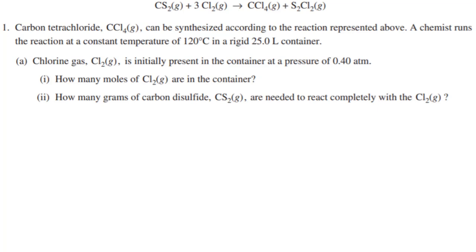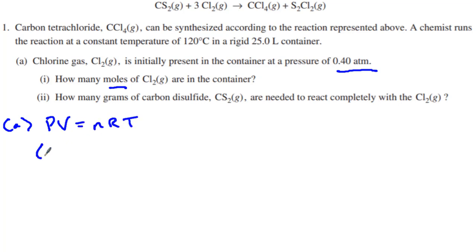Problem number one — you can see we have a balanced chemical reaction here between CS2 (carbon disulfide) plus three chlorine gases, which gives you carbon tetrachloride and S2Cl2 gas. We were trying to synthesize CCl4, and you can see right here it says chlorine gas initially runs out of pressure. We want to know the number of moles. This is a gas problem, so we're going to use PV = nRT. Our pressure is 0.40 atm — as you can see, we have two significant digits, which means we're going to round our answer to two significant digits.